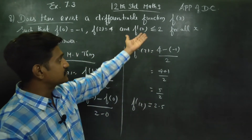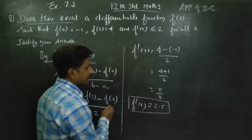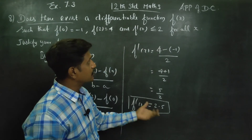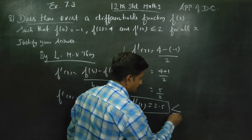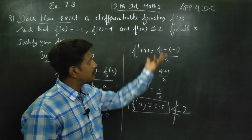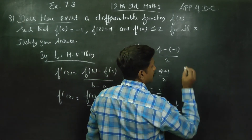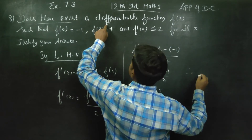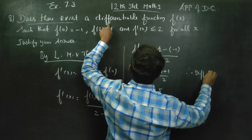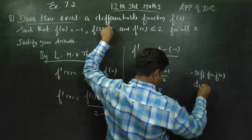But it is given that f dash x must be less than or equal to 2. This value 2.5 is not less than or equal to 2. Therefore, the differentiable function f of x does not exist. Differentiable function f of x does not exist.